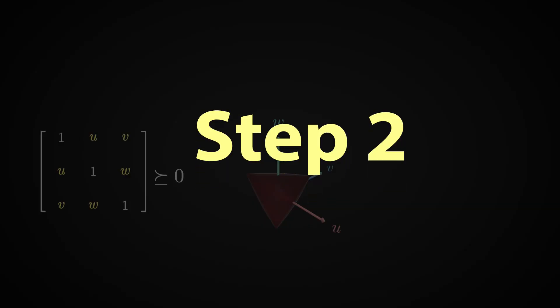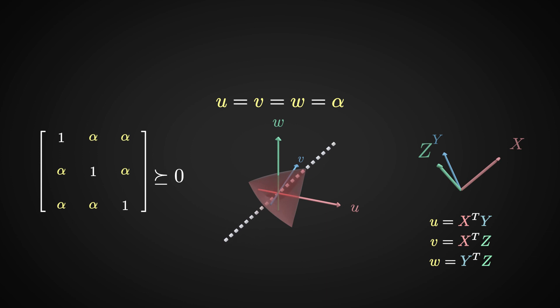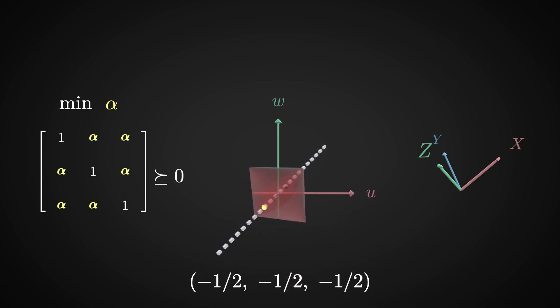Now it's time for the second step. Recall the original question, where we had 3 unit vectors with the same dot product that we called alpha, meaning we are on this line u equal alpha, v equal alpha, w equal alpha. And we want to minimize alpha, meaning that we want to go down this line as much as possible while staying inside the elliptope. And just like magic, you can read from this plot that the minimizer is the point minus one-half, minus one-half, minus one-half. So the minimum alpha is minus one-half.